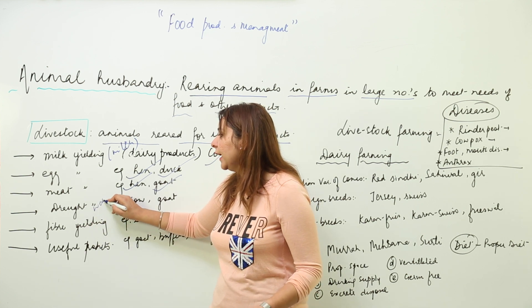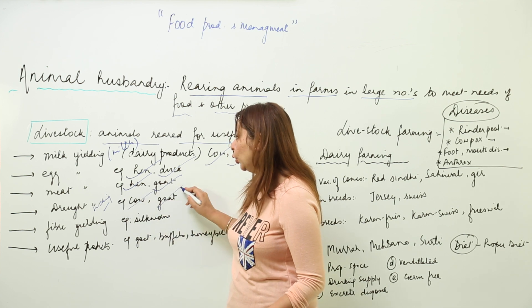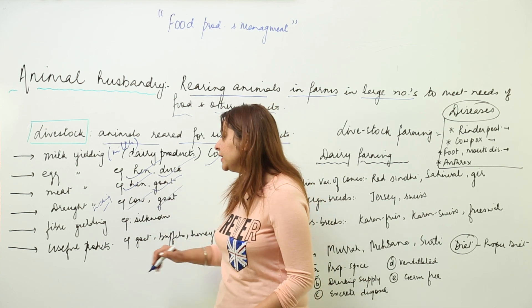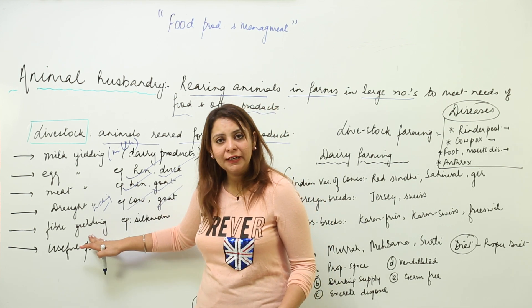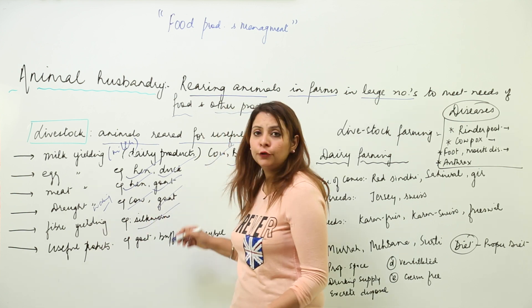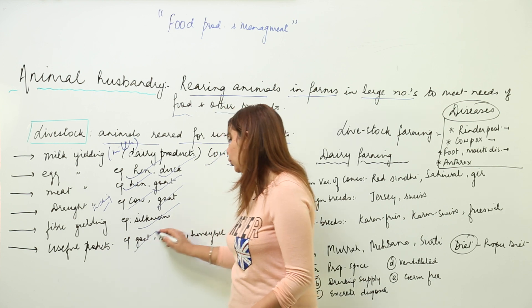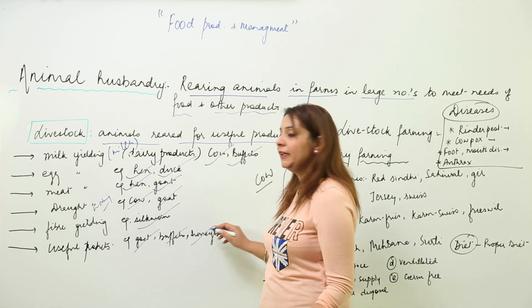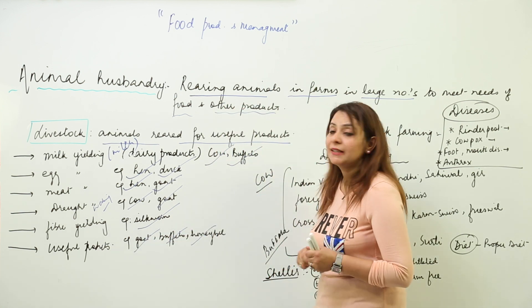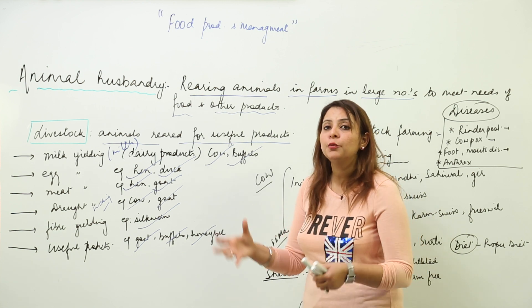We have drought animals, which are working animals that work for us — like cow, bull, and goat. Likewise, we have fiber-yielding animals that give fiber, like silkworm. We also have animals giving other useful products, like goat, buffalo, and honeybee.